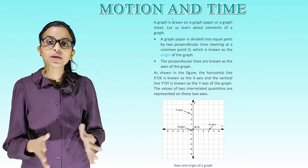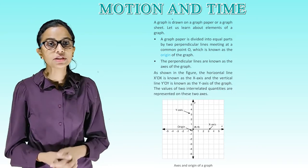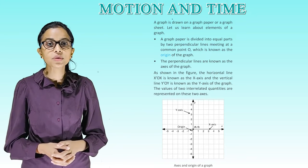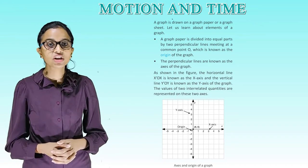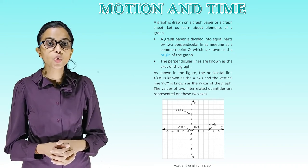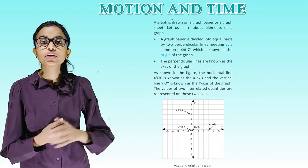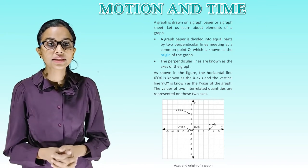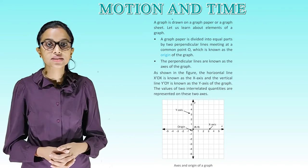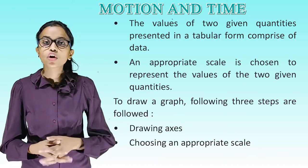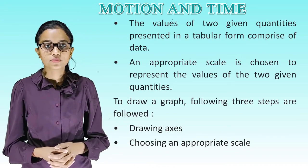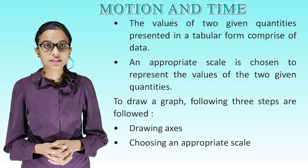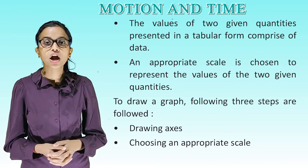A graph is drawn on a graph paper or a graph sheet. Let us learn about elements of graph. A graph paper is divided into equal parts by two perpendicular lines meeting at a common point O, which is known as the origin of the graph. The perpendicular lines are known as the axes of the graph. As shown in the figure, the horizontal line XOX is known as the X axis and the vertical line YOY is known as the Y axis of the graph. The values of two given quantities presented in a tabular form comprises of data. An appropriate scale is chosen to represent the values of the two given quantities.